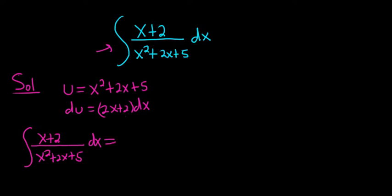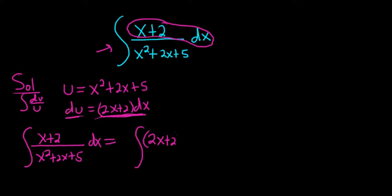This is where the magic happens. So we want this top piece to be du. It would be really nice if it was all of this because then we would just get du over u and we can do the problem. So what we do is we write that down. We write down what we want. So we write down 2x plus 2, parentheses, dx.